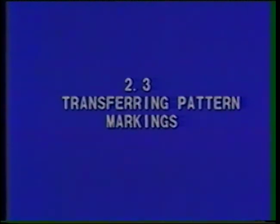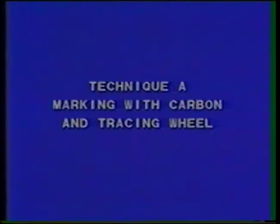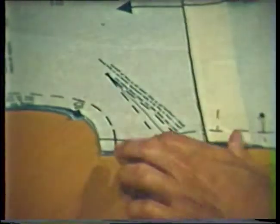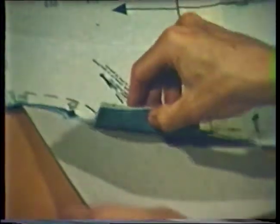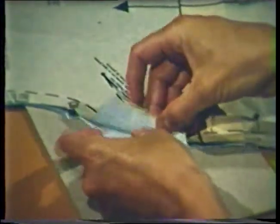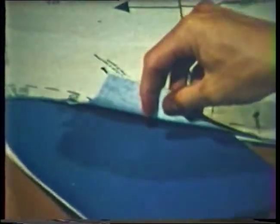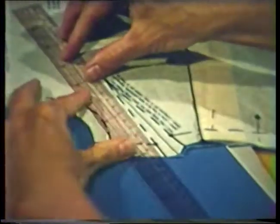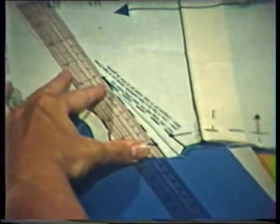Transferring pattern markings. The method used for transferring pattern markings to the fabric depends on the characteristics of that fabric. The tracing wheel and tracing paper can be used on many fabrics, so long as the markings do not show through to the right side of the material. Remove only enough pins to allow the carbon paper to be inserted between the layers of fabric. Protect the working surface so it won't be damaged by the tracing wheel. Place a double sheet of tracing paper between the fabric layers, so the markings will be transferred to the wrong side of the fabric.